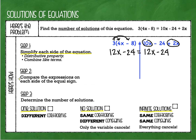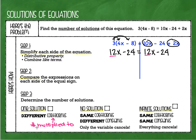Now I am going to compare the expressions — specifically the coefficients and the constants. The coefficients are the numbers that are multiplied to the variable. So x is the variable and 12 is the coefficient on the left side. On the right side, x is the variable and 12 is the coefficient. So the coefficients are both 12 — they are the same. This particular equation has the same coefficients.